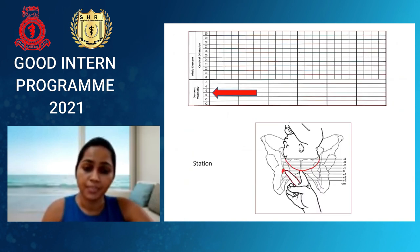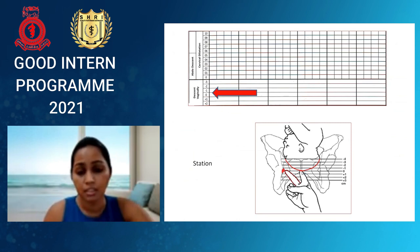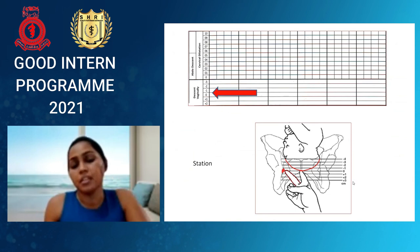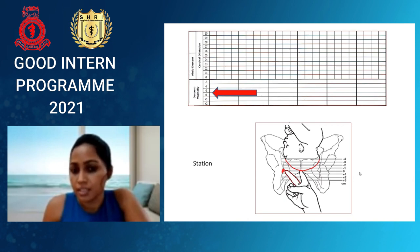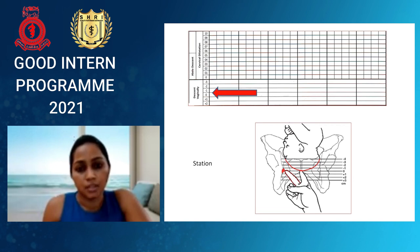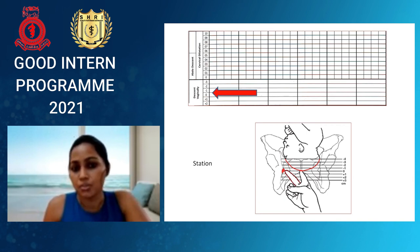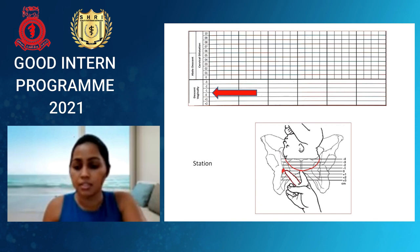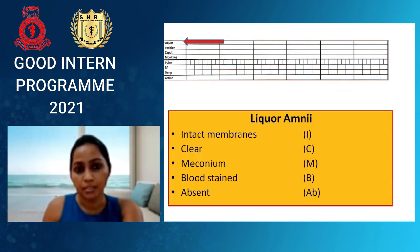Vaginal station refers to the relationship of the vertex presentation to the ischial spines. If the vertex is at the ischial spines, the station is zero. Anything above is negative, anything below is positive. Station is important to confirm the baby's head has descended through the pelvis. This will be understood more clearly with case scenarios later.